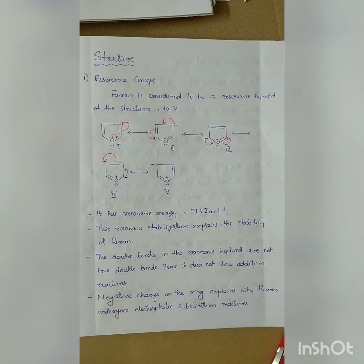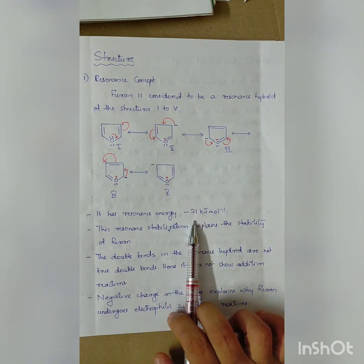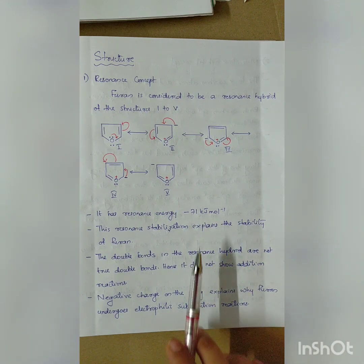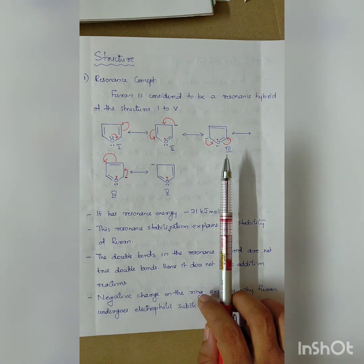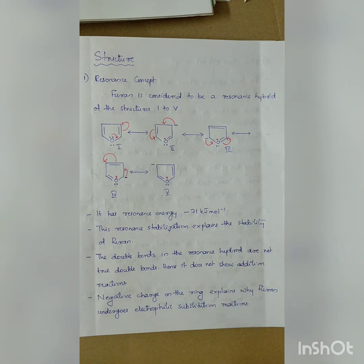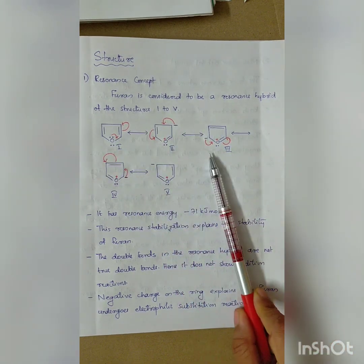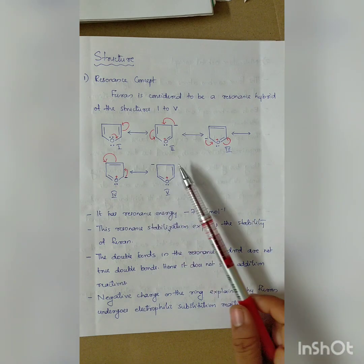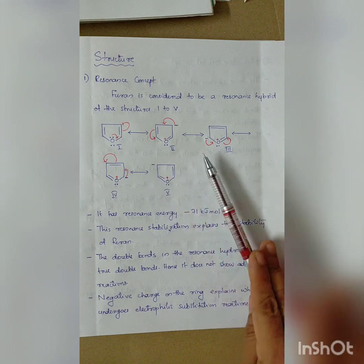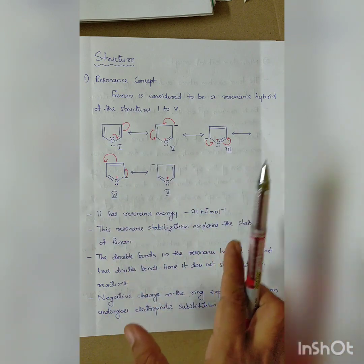The resonance energy confirms that the resonance hybrid is highly stable. In Furan, there are no pure single or double bonds — the bonds are intermediate in character, similar to benzene, due to electron delocalization across the ring.